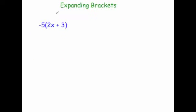Let's have a look at what happens if we've got a minus outside. This time we've got minus 5 bracket 2x plus 3. Well minus 5 times 2x — so 5 times 2 is 10 — so minus 5 times 2x would be minus 10x. And then minus 5 times 3, well minus 5 times 3 is minus 15. So the answer would be minus 10x minus 15.